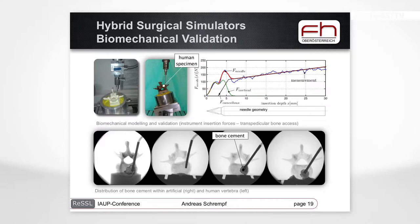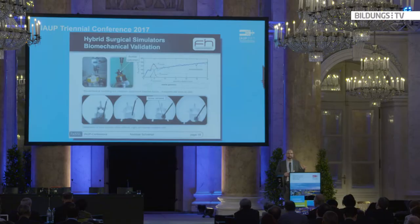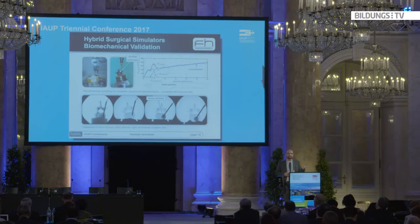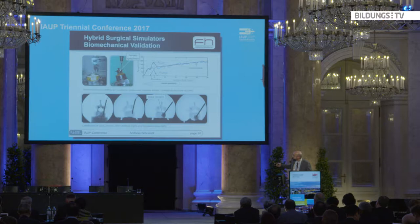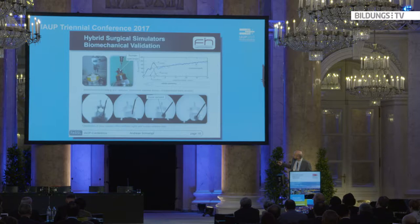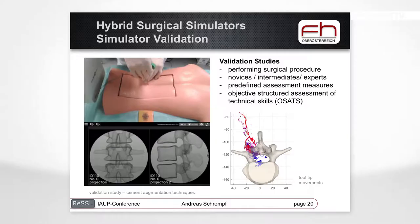We also work on other aspects such as cement distribution. When a cannula introduces cement into the vertebral body, the cement distributes within the vertebral body in a pattern that depends on the structure of the cancellous bone. We compare the cement distribution on a human vertebra with distribution on our artificial vertebra during different stages of cement application. This is the biomechanical validation of the mannequin side.